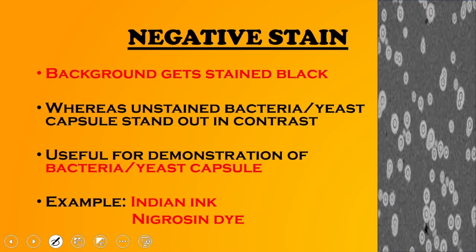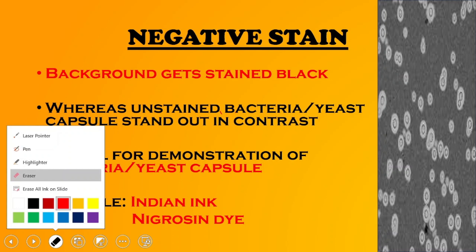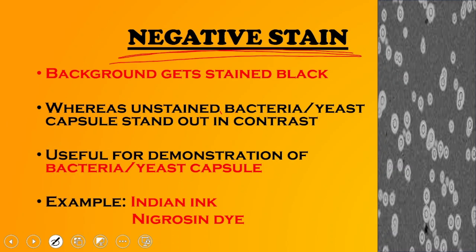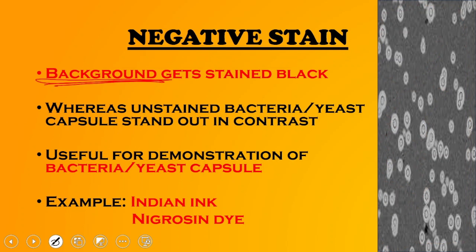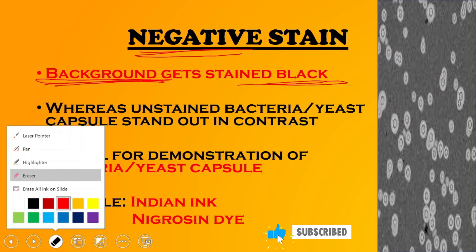The second type is the negative stain, which is a unique stain. Looking at the image, the background is stained. In negative stain, the background is black. The bacteria do not pick up the stain — bacteria are colorless and won't take the stain. It is the background that takes up the stain.